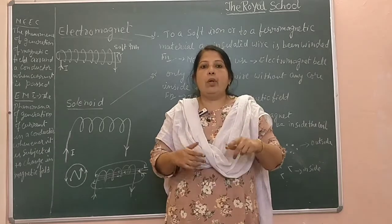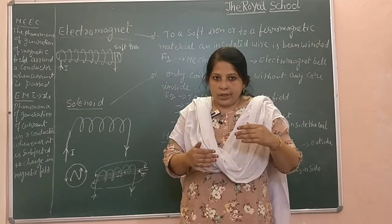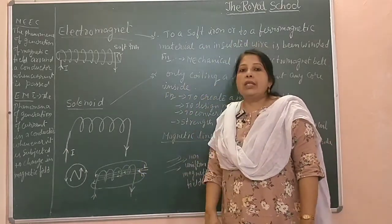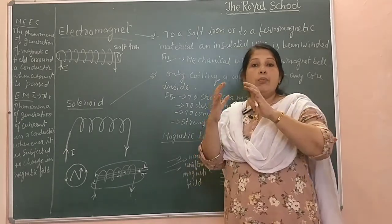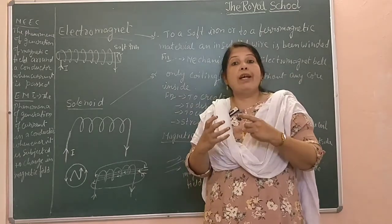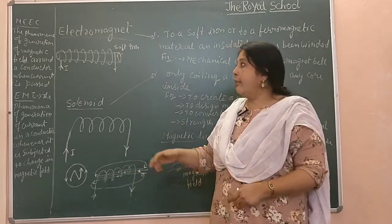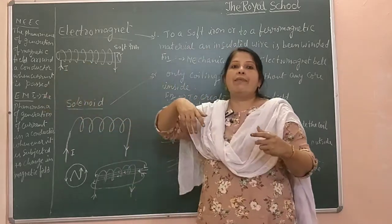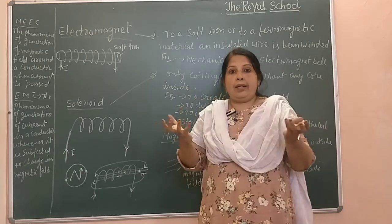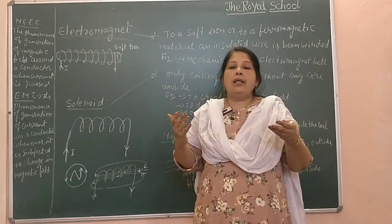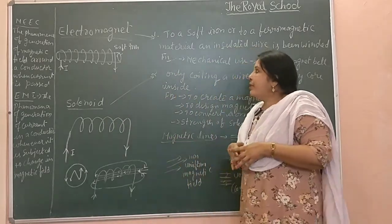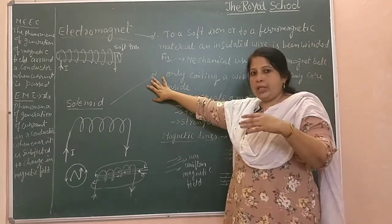This was the entire chapter covered in the previous four videos. This is the fifth video. We need to know how the motor works and how the generator works. But before that, we need to understand magnetic lines and how they are created. To generate current, it is necessary to create a magnetic field. There are two methods: the electromagnet and the solenoid — two methods to create a magnetic field.